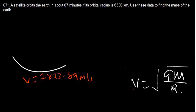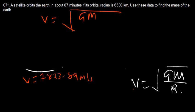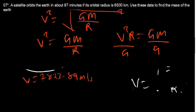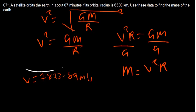We have the formula V equals the square root of G times the mass of the Earth over R. Our goal is to find the mass of the Earth. Squaring both sides gives V squared equals G times M over R. Rearranging, the mass M equals V squared times R divided by G.